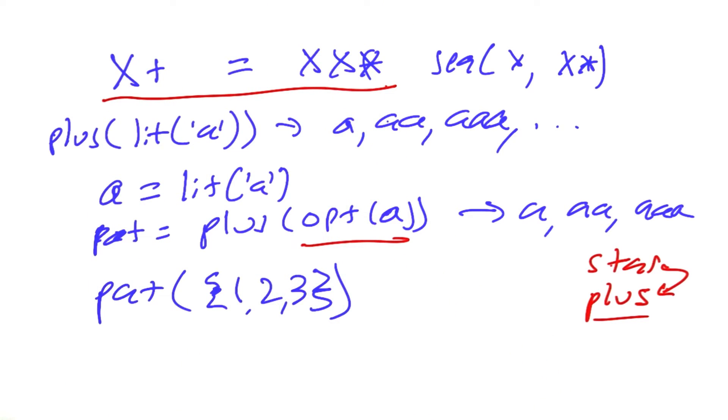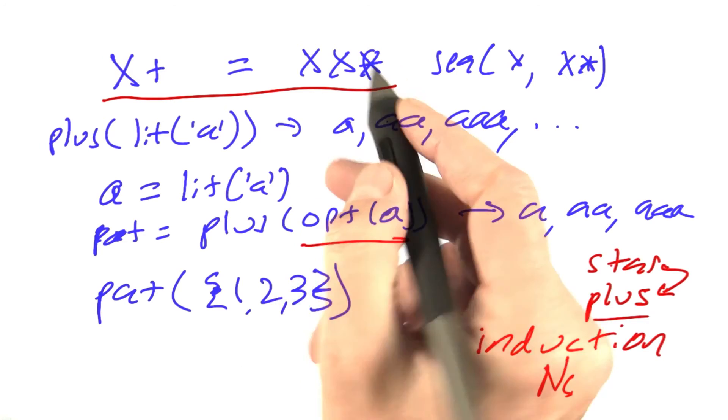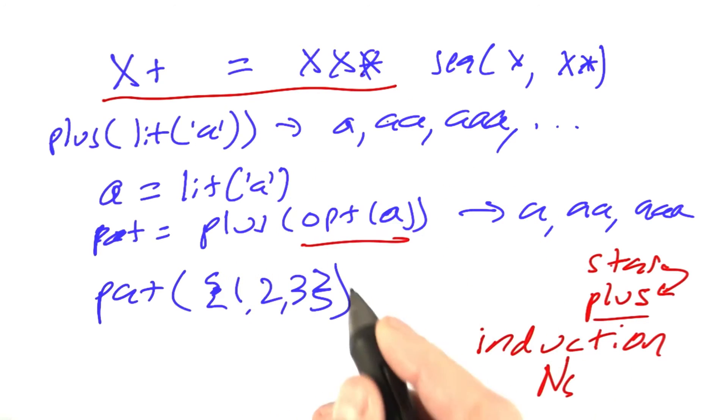We know in order to make sure that a recursion terminates, we have to have some induction where we're reducing something. It makes sense here that what we're going to reduce is our set ends, and one way to guarantee to do that is to say, when I'm generating the x followed by the x star, let's make sure that the x generates at least one character. And if we can guarantee that x generates a character, then when we go to do the x star, we've reduced our input, and so we have this inductive property.